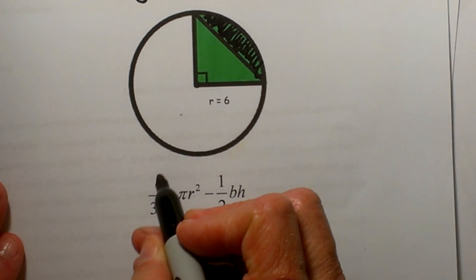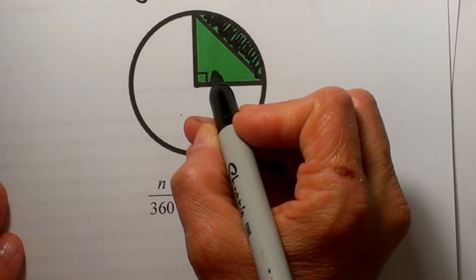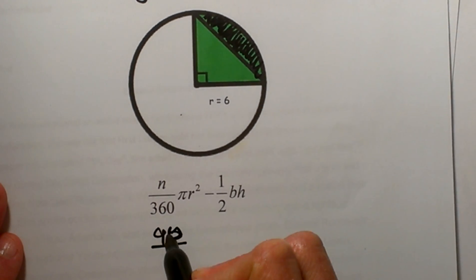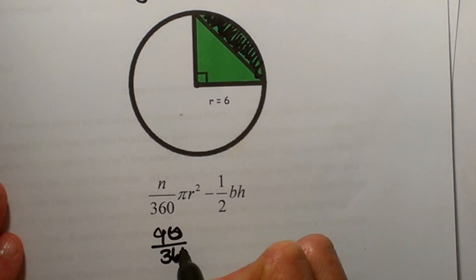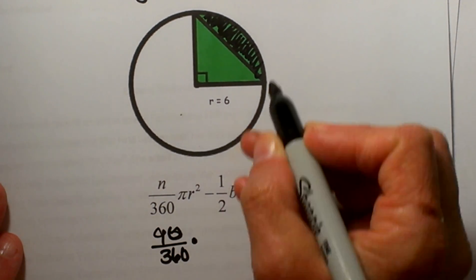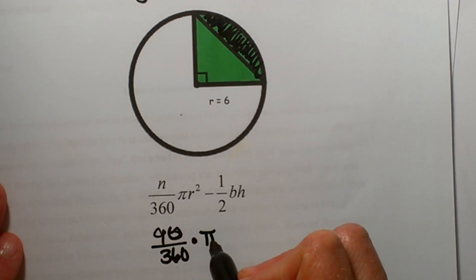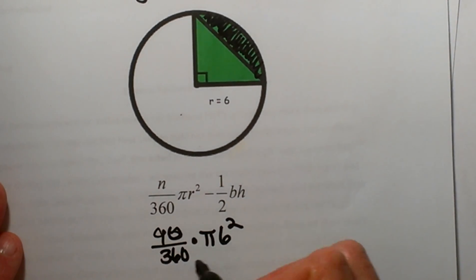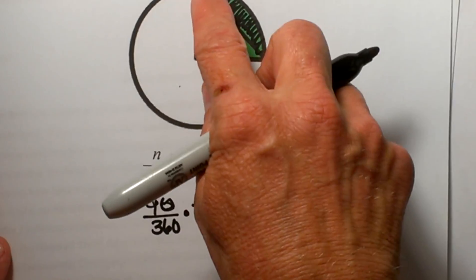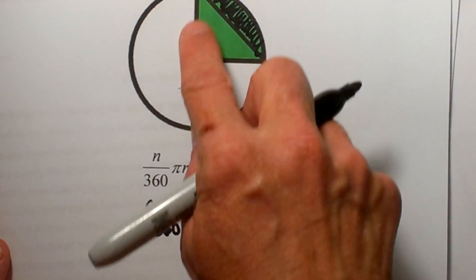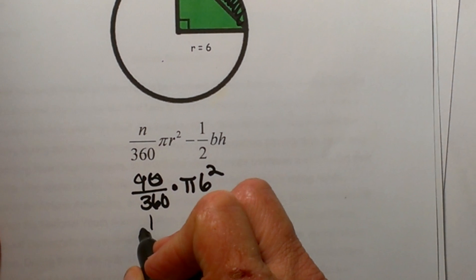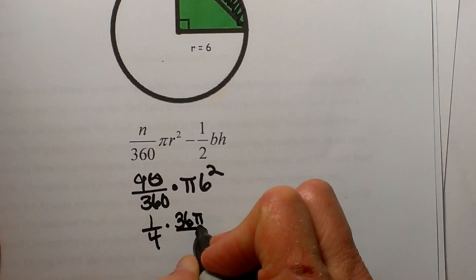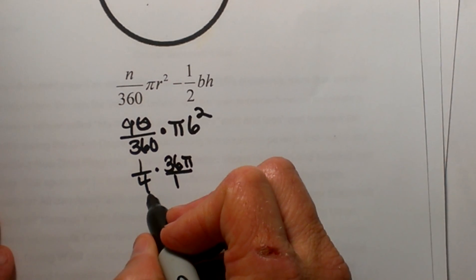Let's start plugging in. In this triangle we know our angle is 90 degrees, so that is really just one fourth of our circle. The area of the circle is pi times radius squared, and our radius is 6, so pi times 6 squared. The area of this whole sector is one fourth of 36 pi, which ends up being 9 pi.